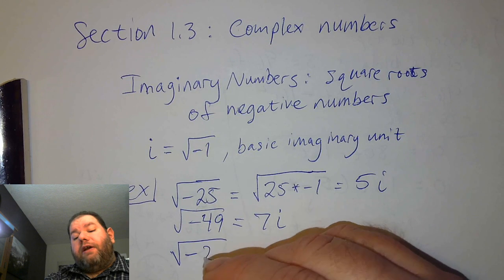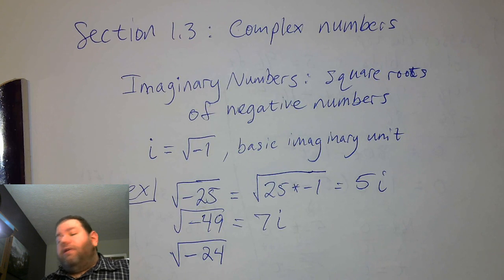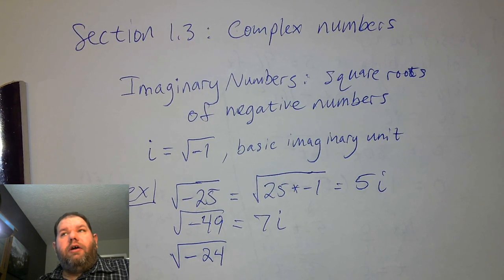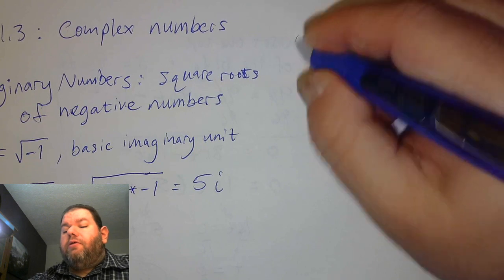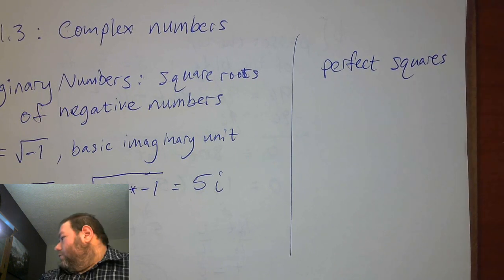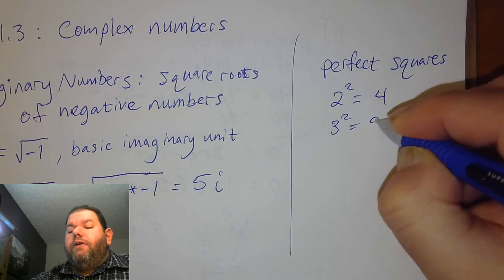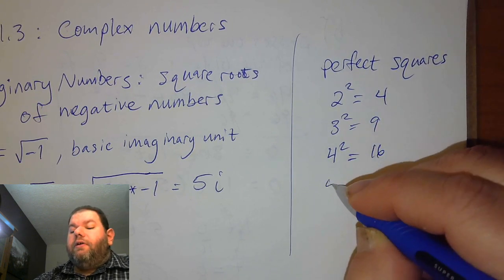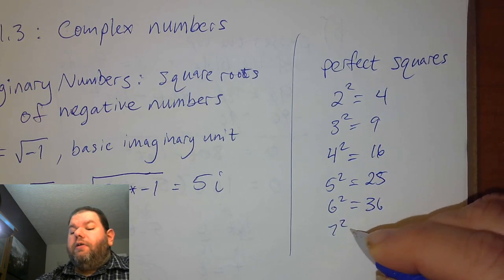If we have the square root of negative 24, well, 24 is not a perfect square. We want to simplify this as best we can. We think about what perfect squares are factors of 24. Our perfect squares are: 4, 9, 16, 25, 36, 49, 64, and so on. Any of these that happen to be factors of 24 — we want to factor out the largest one possible.